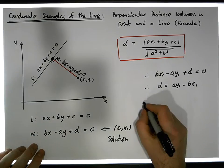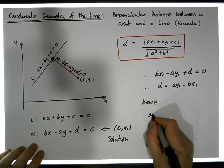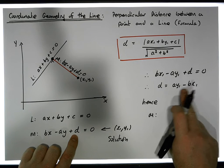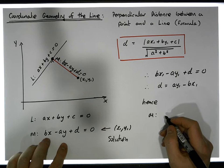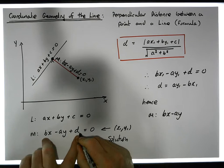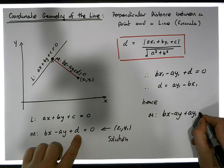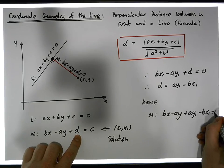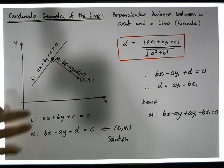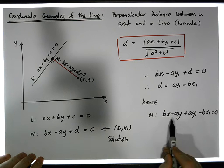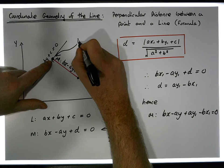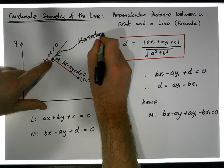Hence the equation of line M, with D substituted in, must be BX minus AY plus AY₁ minus BX₁ equals zero. So now we have two equations: line L is AX plus BY plus C equals zero, and line M is BX minus AY plus AY₁ minus BX₁ equals zero. We can find their point of intersection, which gives us the foot of the perpendicular from (X₁, Y₁) to line L.